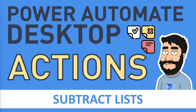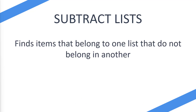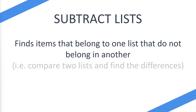Today we're looking at Power Automate Desktop actions, specifically the Subtract Lists action. The Subtract Lists action finds items that belong to one list that do not belong to another. So essentially we're comparing two lists, finding the differences, and ending up with a list of those differences.